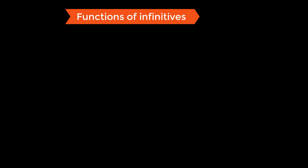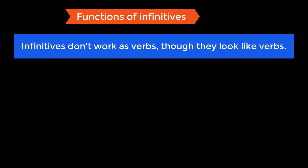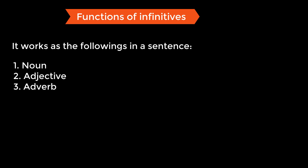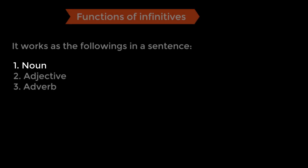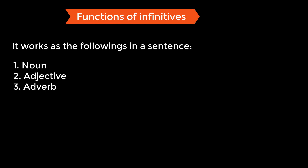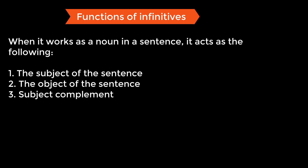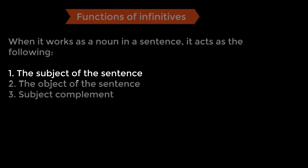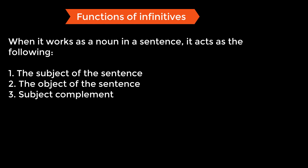Now let's understand what the infinitive does in a sentence. Though it looks like a verb, it does not act as one. An infinitive plays three roles: it can work as a noun, as an adjective, or as an adverb. When it works as a noun, it can be the subject of the sentence, the object of the sentence, or the subject complement.